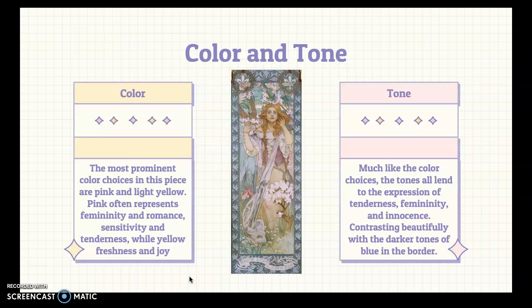The most prominent color choices in this piece are pink and light yellow. Pink represents femininity, romance, sensitivity, and tenderness in paintings, while that light shade of yellow often represents freshness, joy, and innocence. Much like the color choices, the tones lend to this expression of tenderness and femininity, and they contrast beautifully with the dark tones of the border.